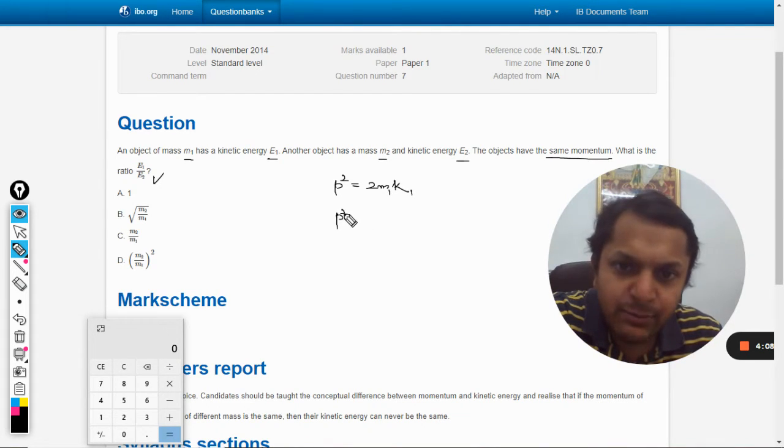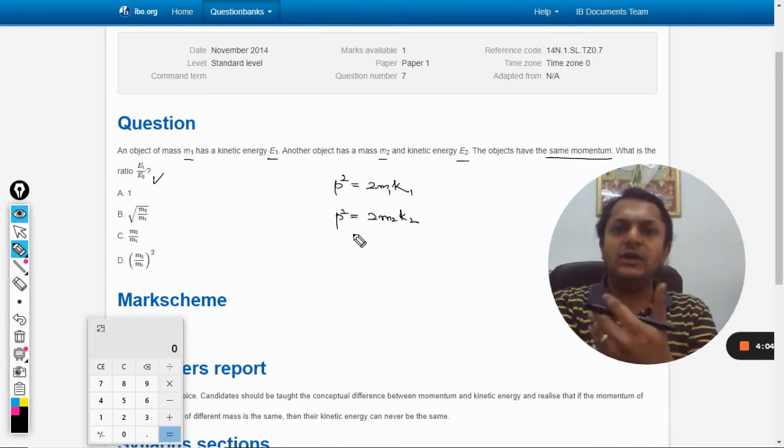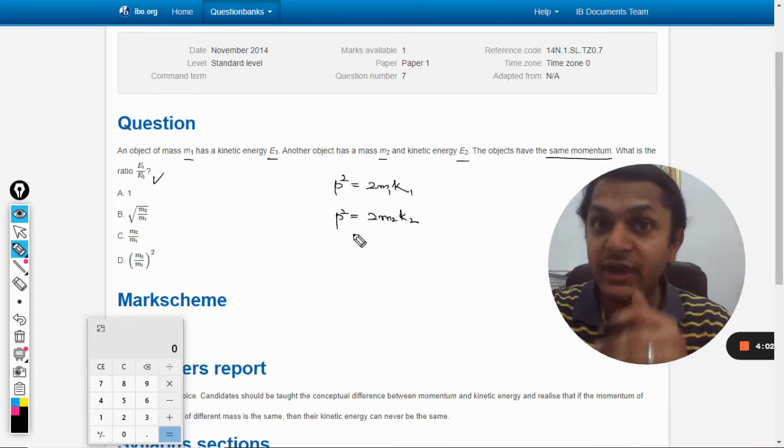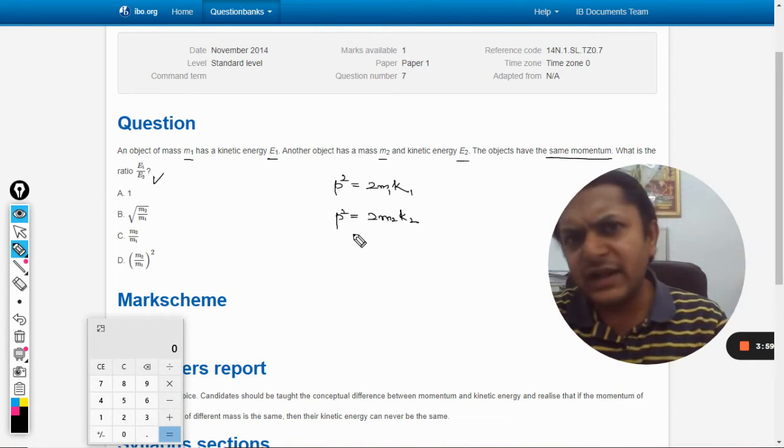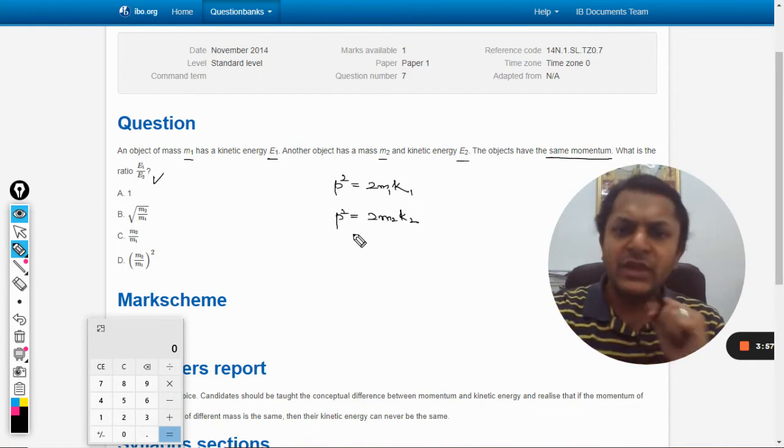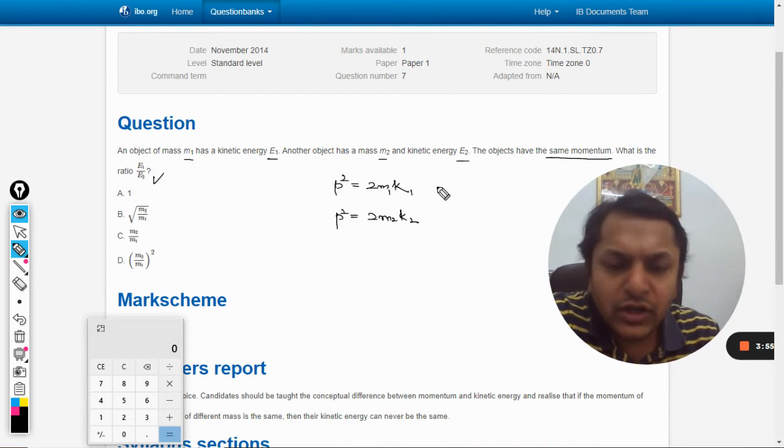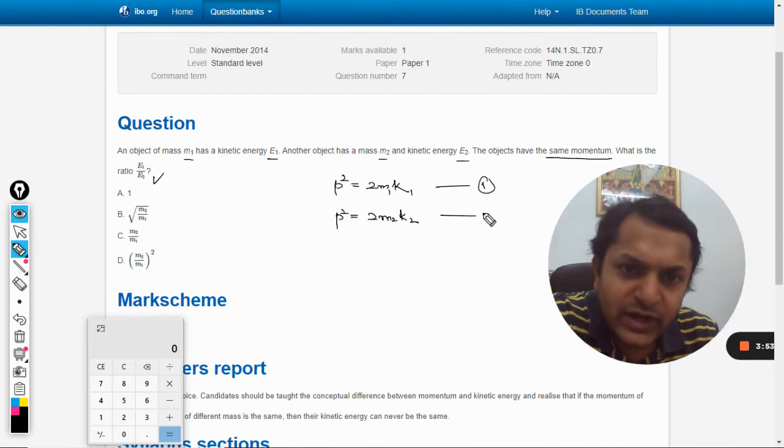So p² equals 2m1k1 and p² equals 2m2k2, because the momentum is same but the mass is m1, m2 and energies are e1 and e2. I'm writing it as k1 and k2. These two equations have to be equated now.